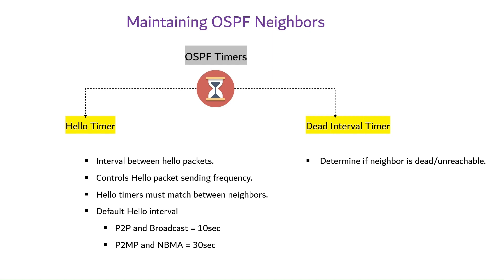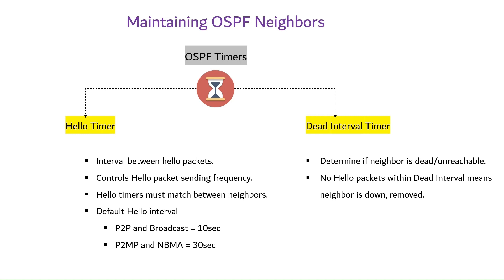Next, let's look at the dead interval timer. The dead interval timer is used to determine when a neighbor is considered dead or unreachable. If a router does not receive a hello packet from a particular neighbor within the dead interval time, it assumes the neighbor is down and removes it from its list of neighbors.